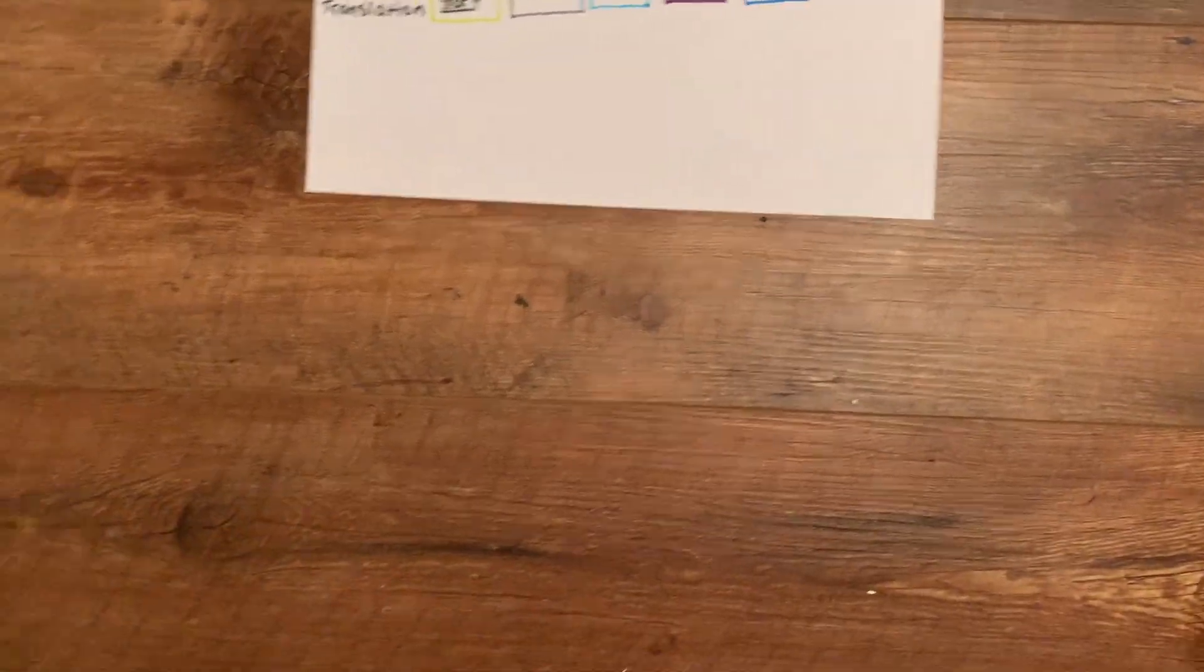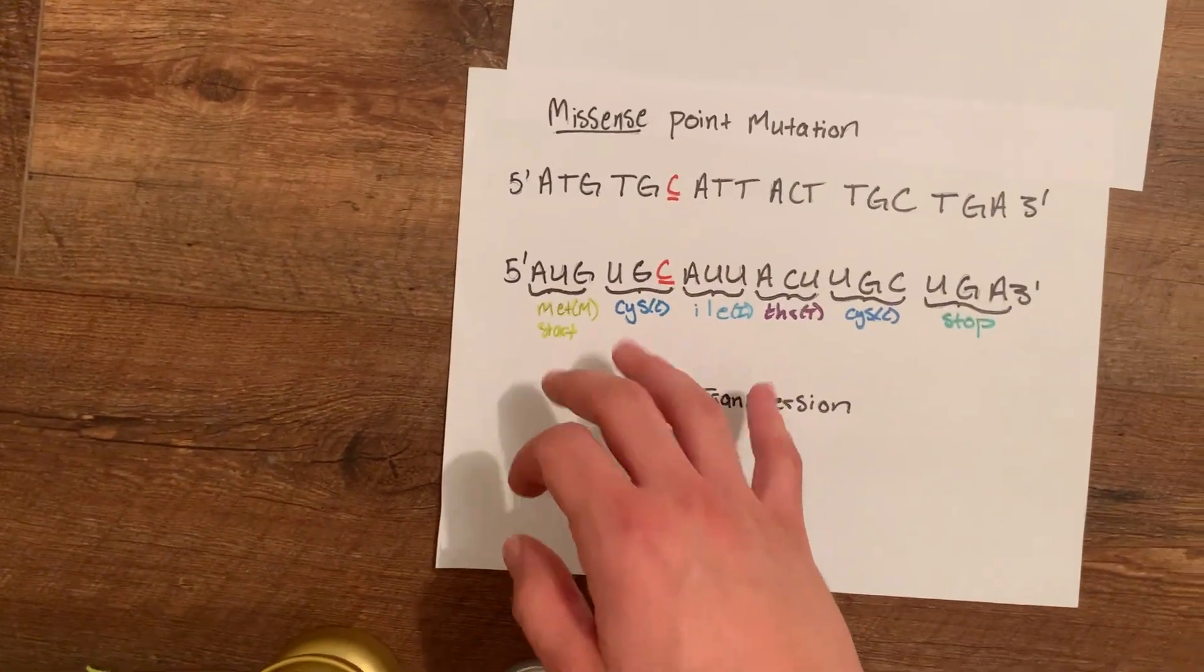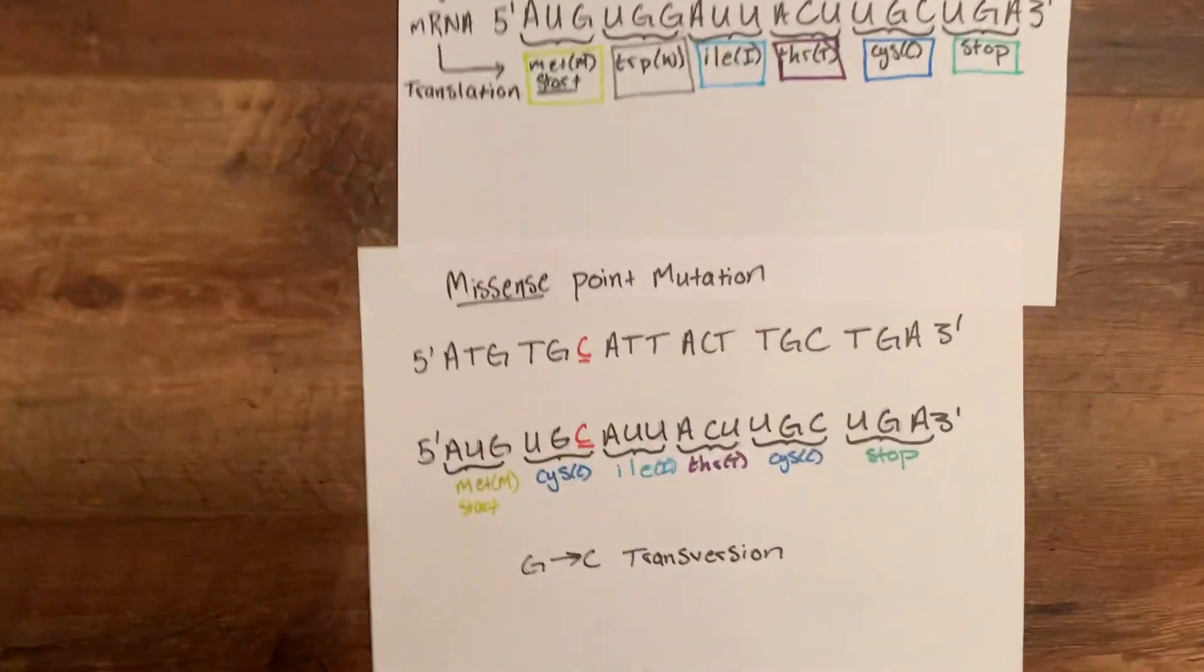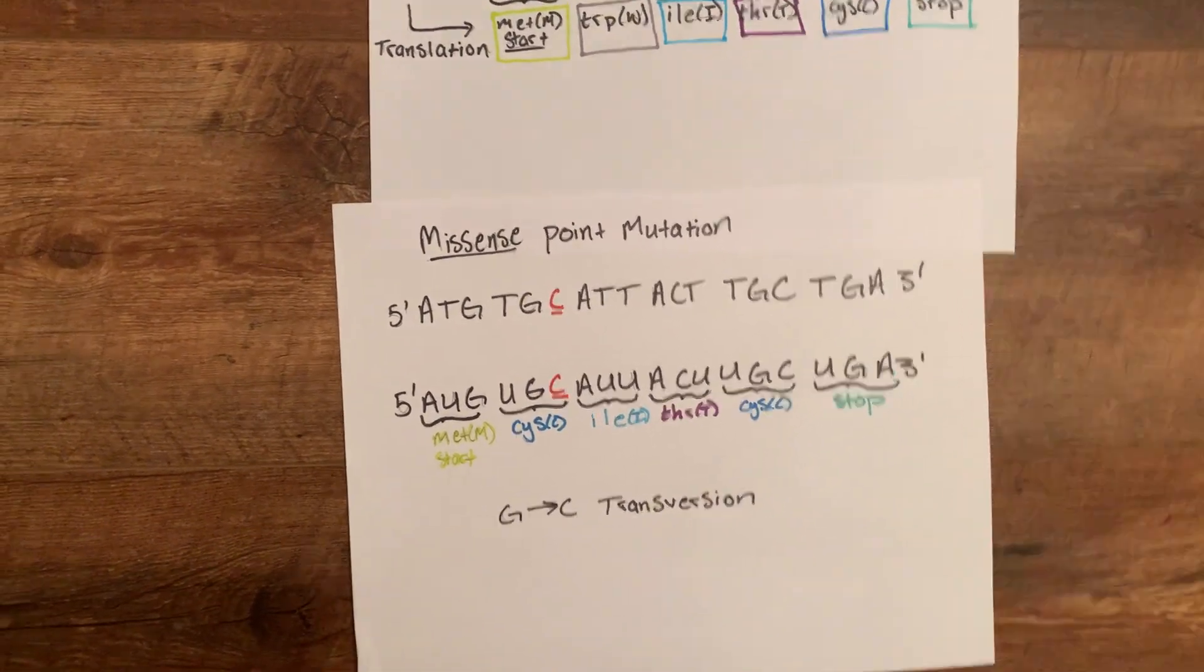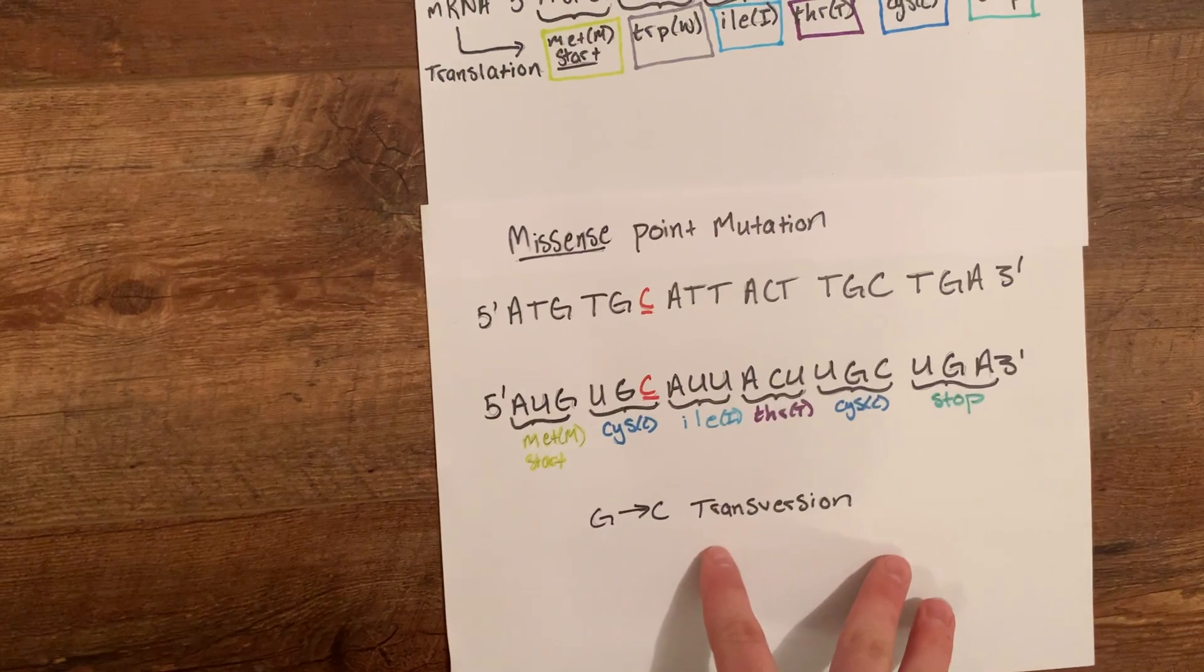The first example is going to be missense. Missense replaces a base with another base and that then completely changes the amino acid that the codon makes.